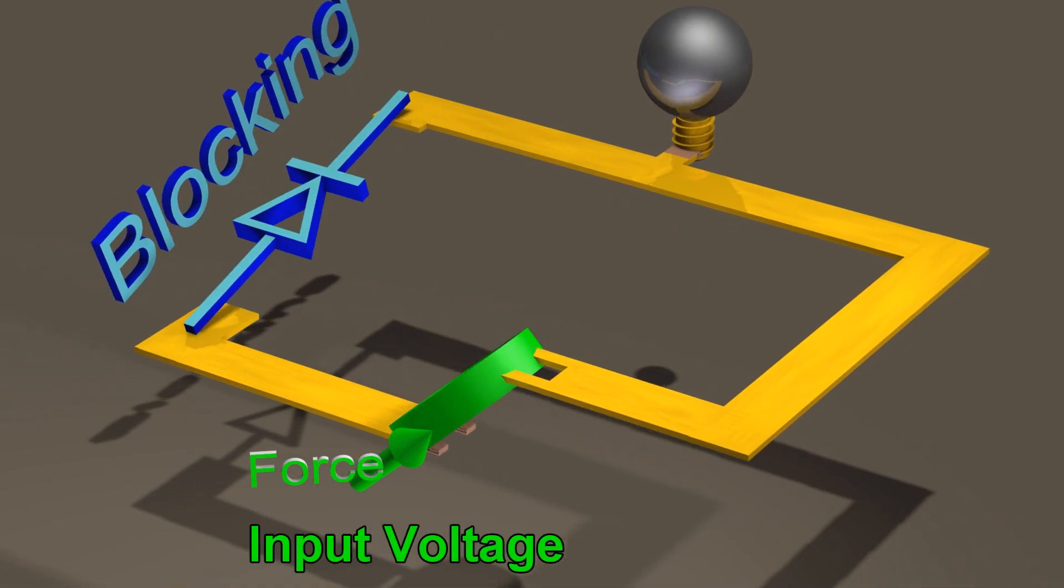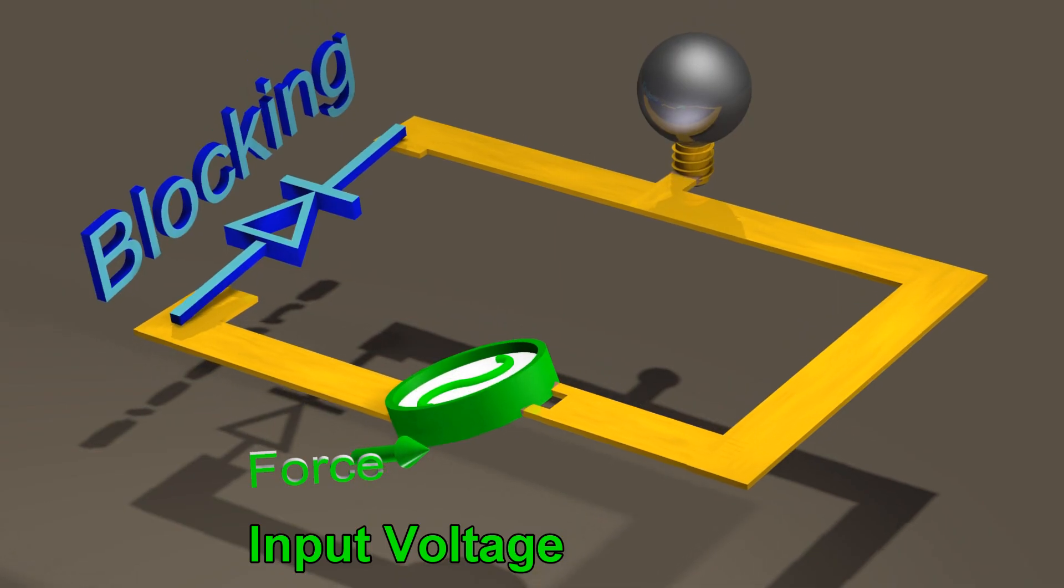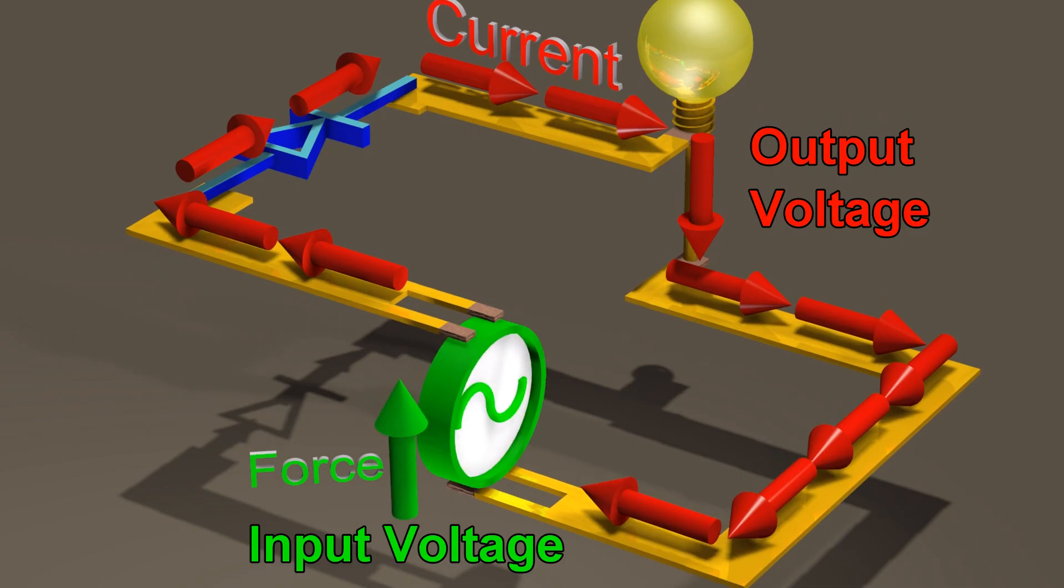Therefore, by adding just a single diode to the circuit, we have now ensured that the voltage and current across our device will always be only in one direction.